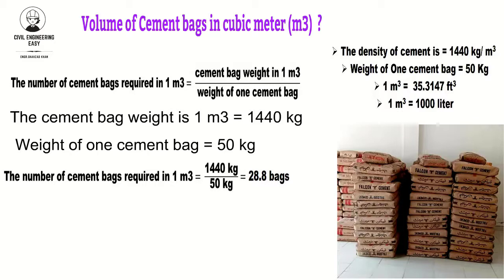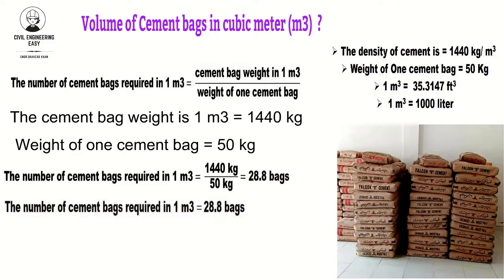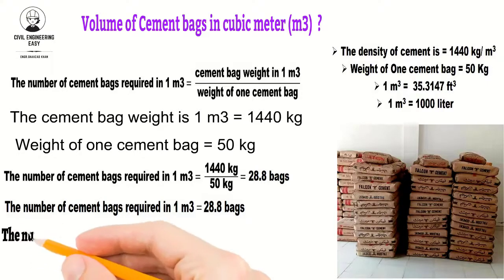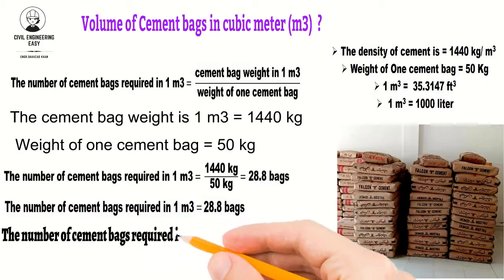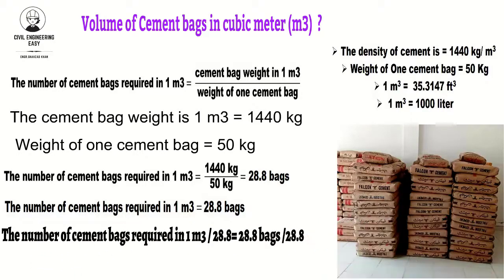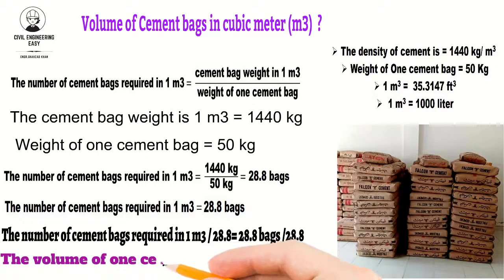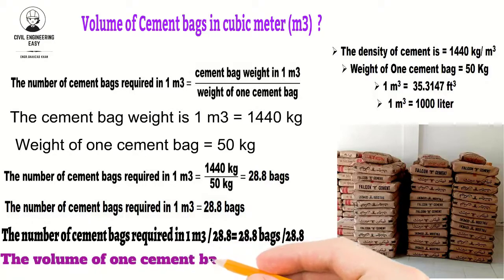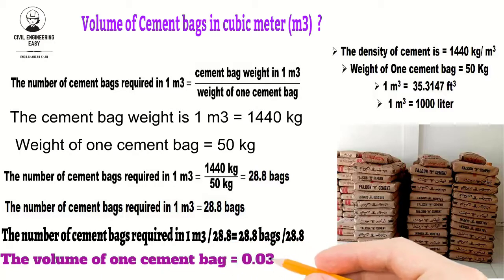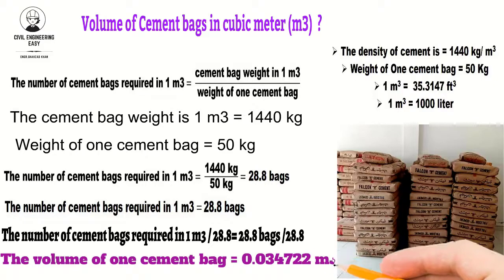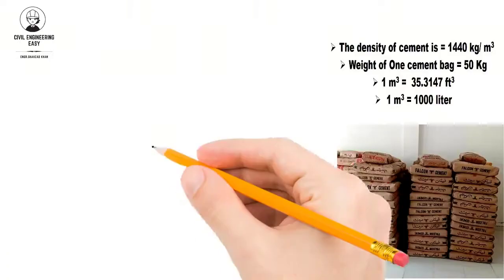By calculation, we get 28.80 bags in one cubic meter. So the relationship is: one cubic meter equals 28.80 bags. Dividing both sides by 28.80, we get 0.034722 cubic meters per one bag of cement. Therefore, the volume of one bag of cement in cubic meters is 0.034722 m³.